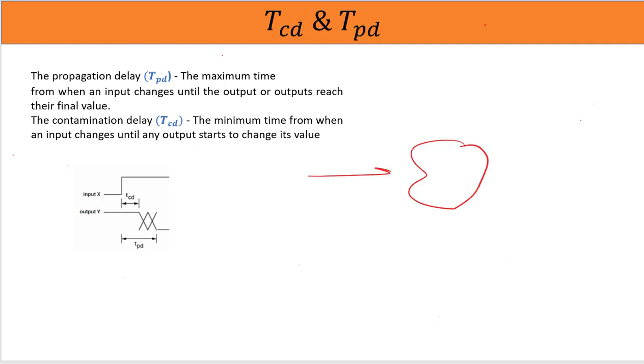When we give the input to any combinational logic, output takes some time, let's say delta t. Output does not come immediately the moment you give the input. So we define two terms: contamination delay and the propagation delay.